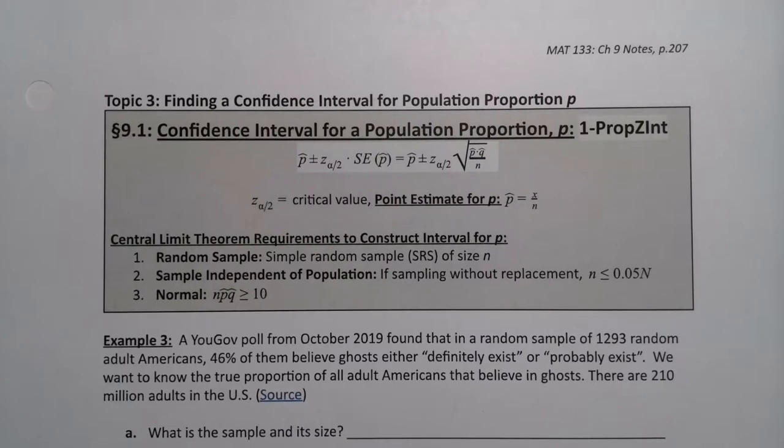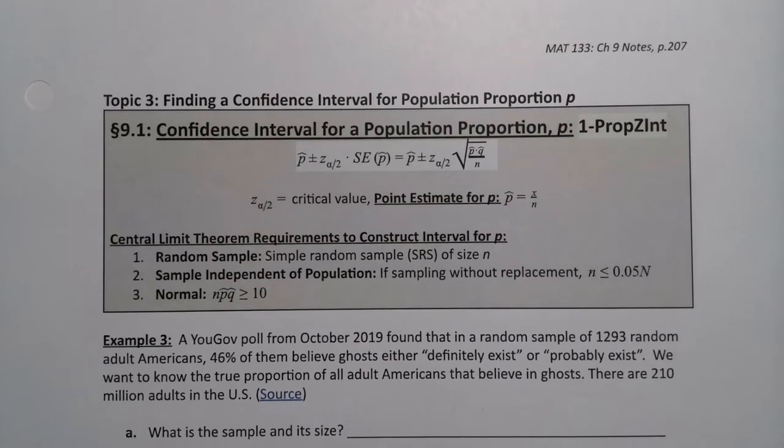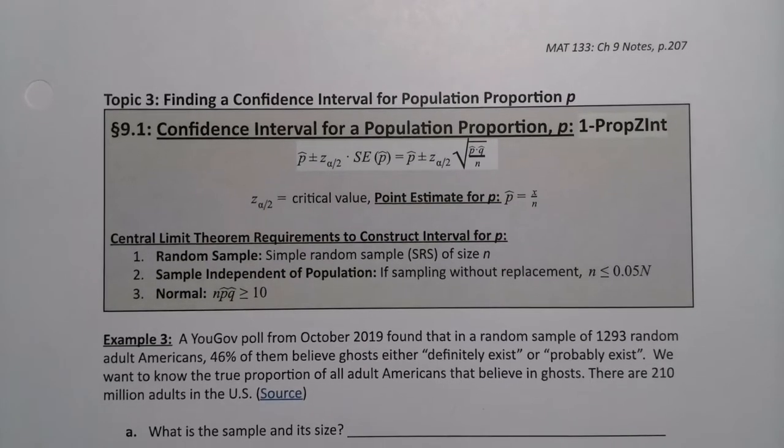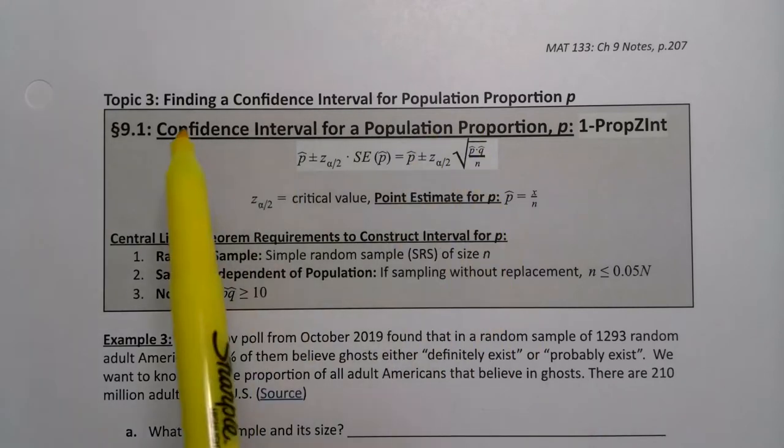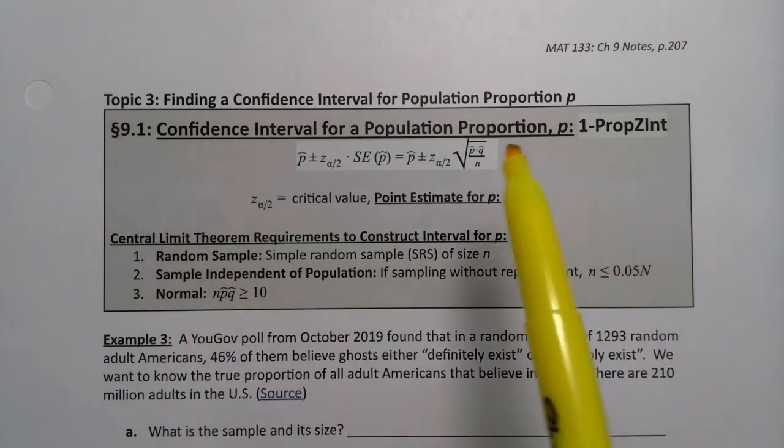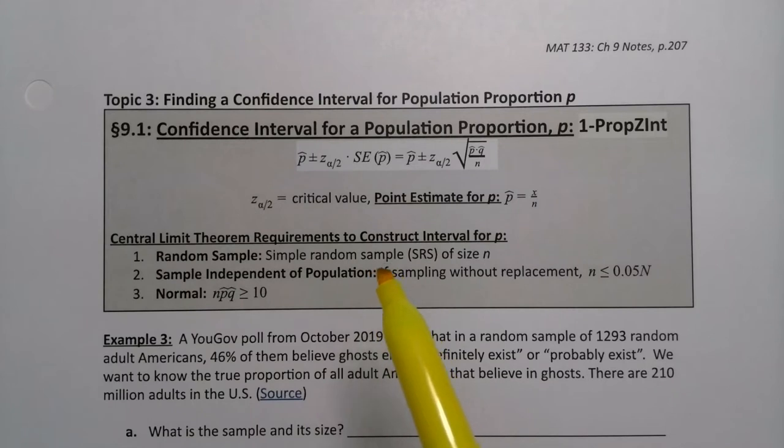Since we know how to find critical values and we know the general theory for confidence intervals, it's time for us to put it all together and find the confidence interval for a proportion from beginning to end, and also learn a lot about confidence intervals for proportions along the way.